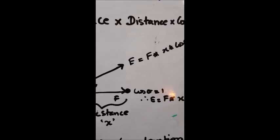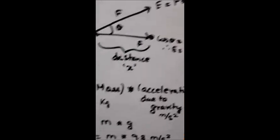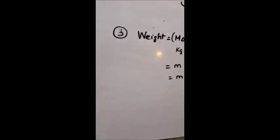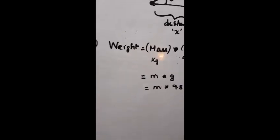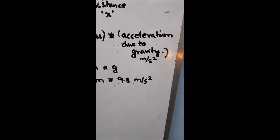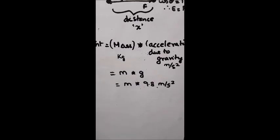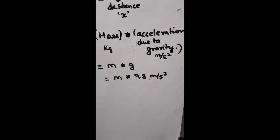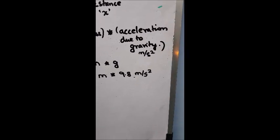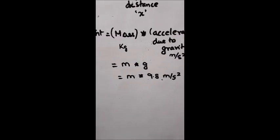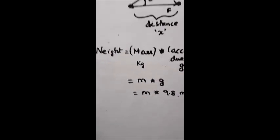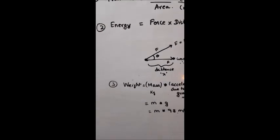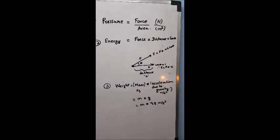This is another formula, weight, which is measured by mass times acceleration due to gravity. The units are m times g, and the gravitational constant is 9.8 meter per second square, and mass is measured in kilogram. Just to brief you about the formulas that we'll be using in our proceedings.